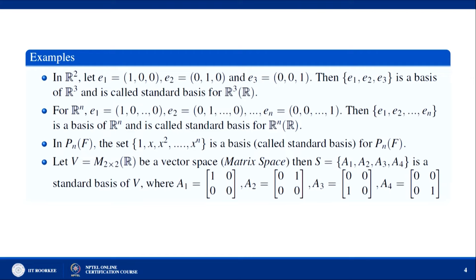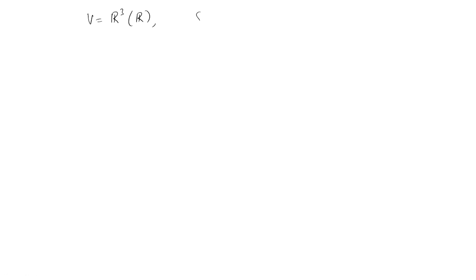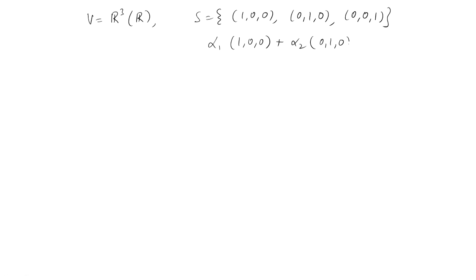In R³, if you take e₁ = (1,0,0), e₂ = (0,1,0), e₃ = (0,0,1), this is a basis of R³ called the standard basis. To verify linear independence, take a linear combination of this set, put it equal to zero, and this implies α₁ = α₂ = α₃ = 0, so the set is linearly independent.